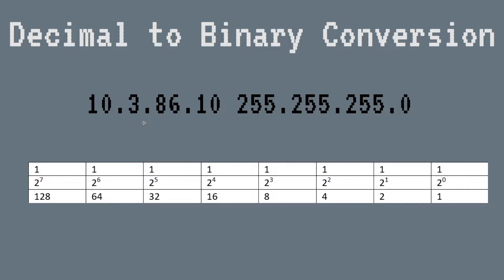Binary uses what's called the base two numeral system. Practically, what that means is that every single binary digit — all eight bits — has a decimal representation using powers of two: two to the seventh, two to the sixth, two to the fifth, two to the fourth, two to the third, two to the second, two to the first, and two to the zero. What you really need to memorize is the bottom row: 128, 64, 32, 16, 8, 4, 2, 1.